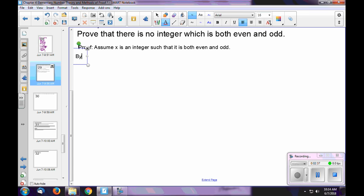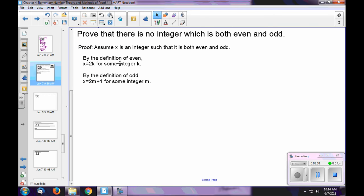What else do we know? By the definition of even, x can be written as 2k for some integer k. We also know by the definition of odd that x can be written as 2m plus 1 for some integer m. Remember, just pro tip, right? You can never reuse variables here, okay?